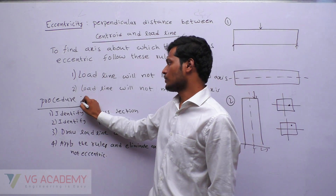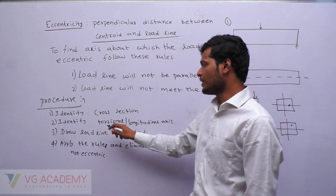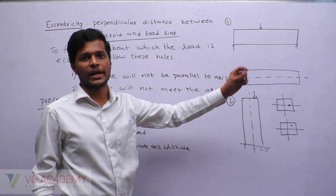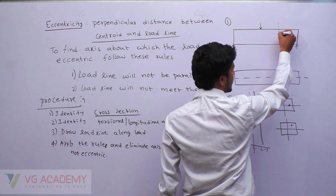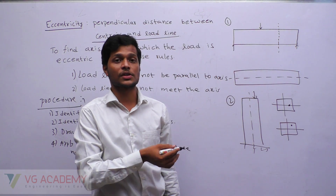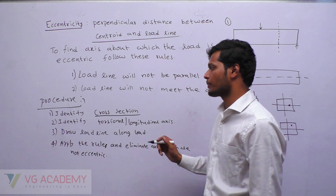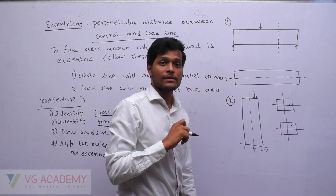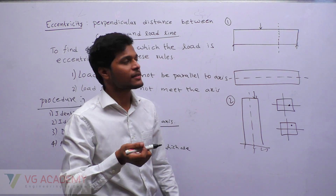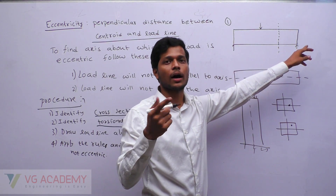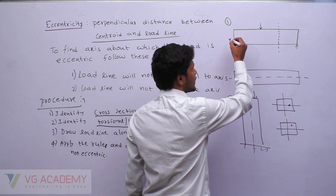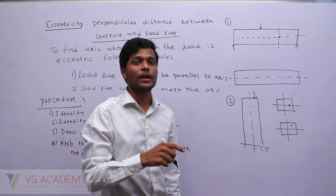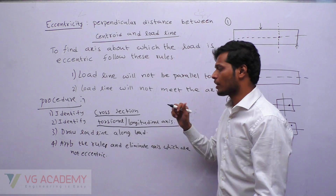Here is the procedure. First step: identify the cross section. Here I have given one beam — take any cross section to apply this. Second step: identify the torsional axis or longitudinal axis. The longitudinal axis is the axis which cuts the cross section at a single point, or the axis that is along the length. I have identified the longitudinal axis.